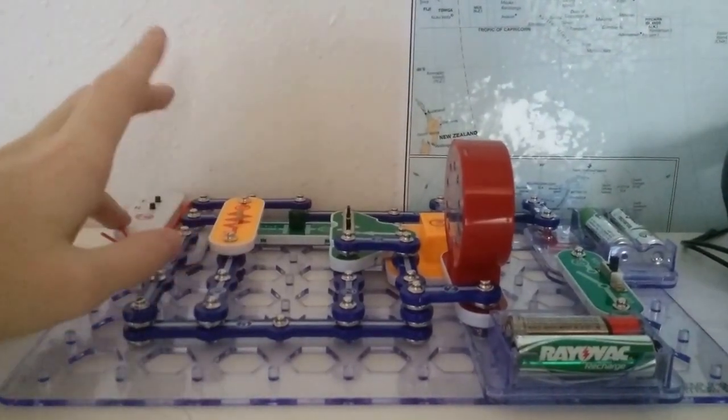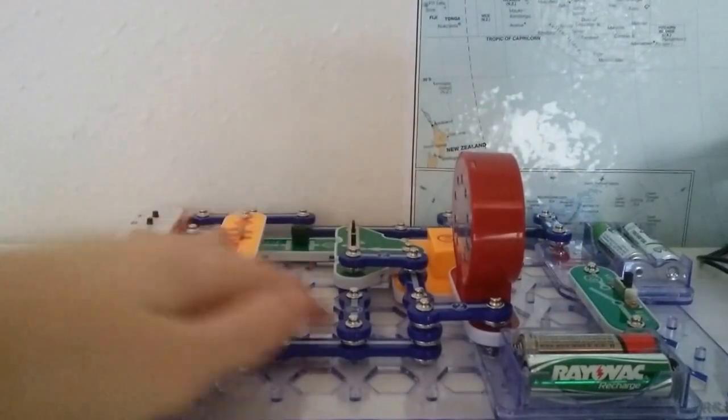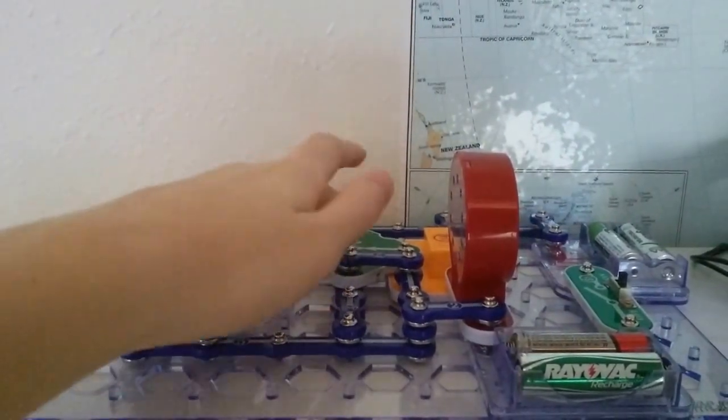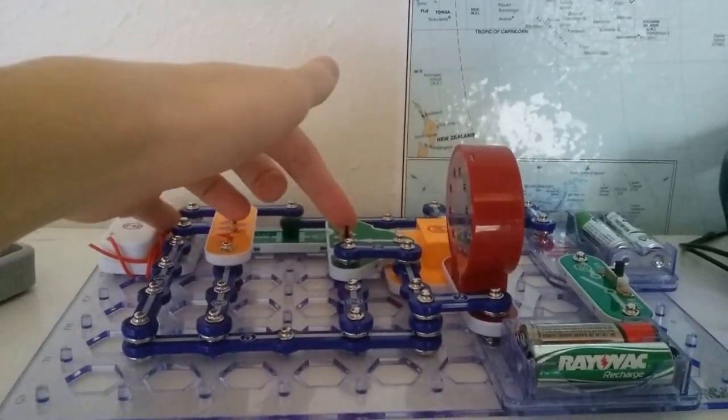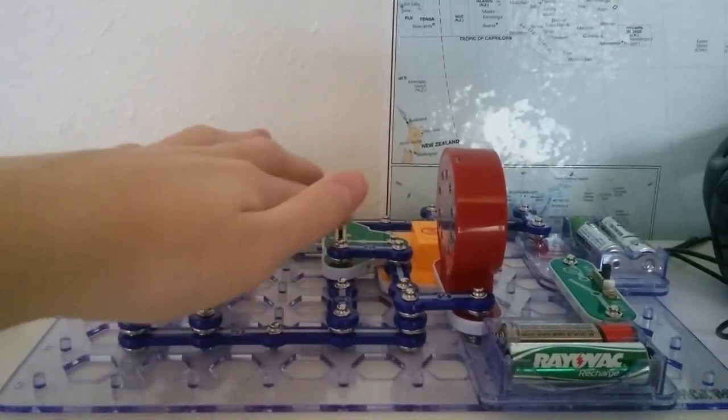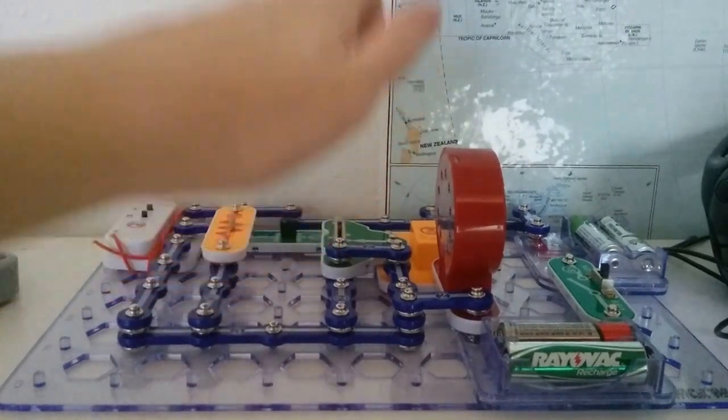This is the receiver unit right here. This is the speaker. This is the variable resistor right here. You turn this and it will adjust the volume. We're going to leave it here so that it's off until we turn it on, then we're going to jack it all the way up.